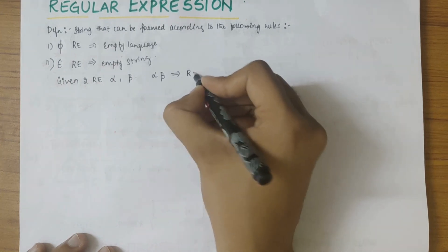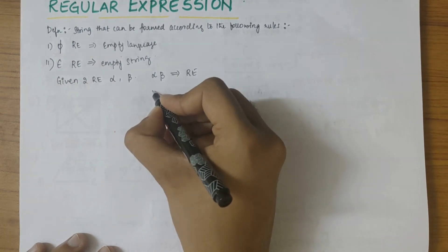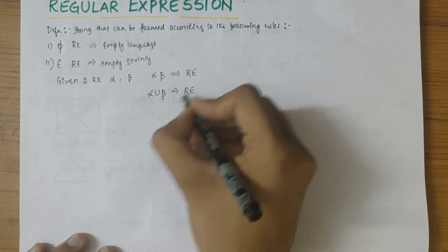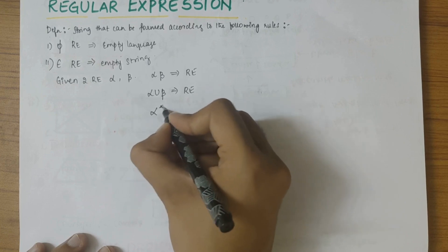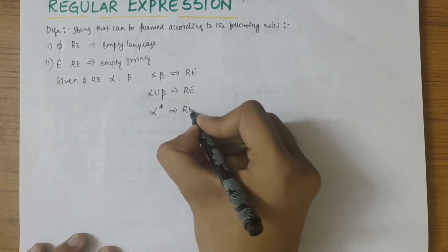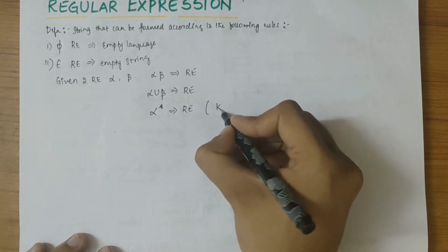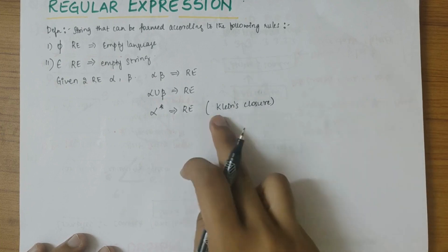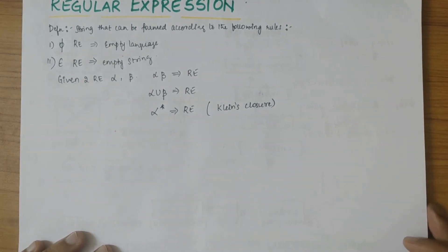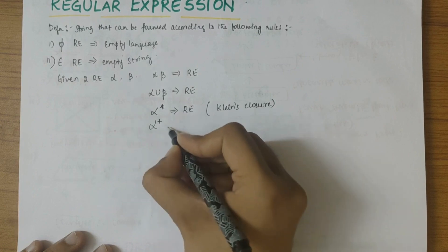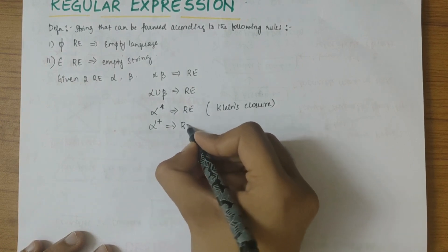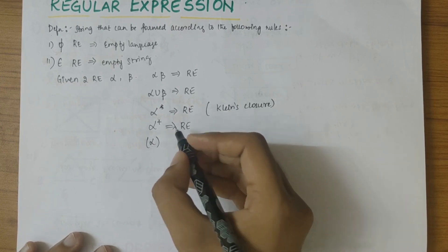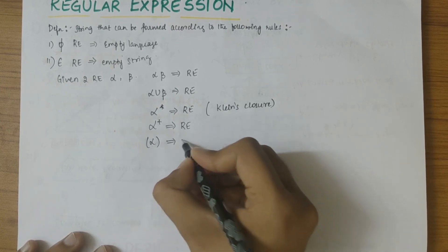The union of two regular expressions can also be taken as a regular expression. Alpha-star is also considered a regular expression — this is called Kleene's closure, which we'll look into in further videos. Alpha-plus is also considered a regular expression, and parenthesized alpha is also a regular expression.